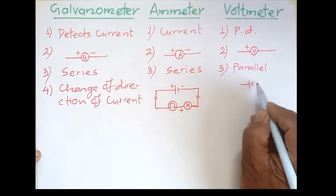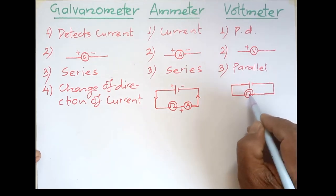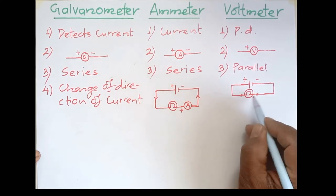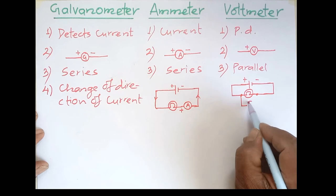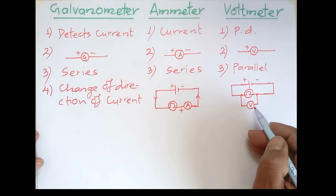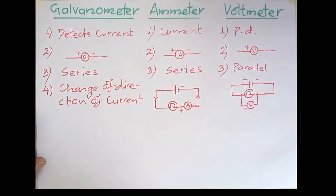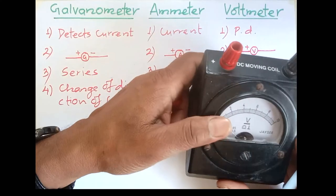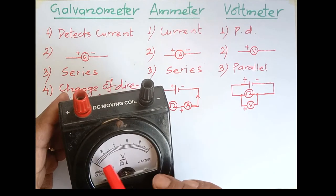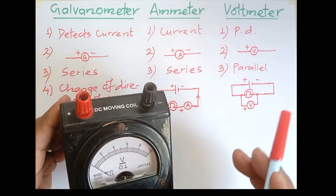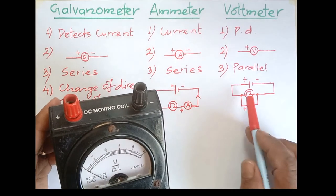For example, if a cell is connected to a bulb and you want to find the potential difference between the two points on either side of the bulb, you connect the voltmeter in parallel across those two points. The wire from the positive terminal connects to the plus terminal of the voltmeter and the other wire to the minus terminal. Internally, the voltmeter is modified from a galvanometer and its resistance is infinitely large — a very high resistance is connected inside it.